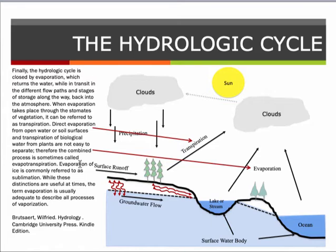Evaporation of ice is called sublimation because ice can go from the solid phase to the vapor phase with no apparent time spent in the liquid phase. The transition is very quick — solid directly to vapor. On sunny days in icy climates, you can watch ice almost off-gas if the light is correct. While these distinctions are useful, the term evaporation is usually adequate to describe all processes of vaporization.